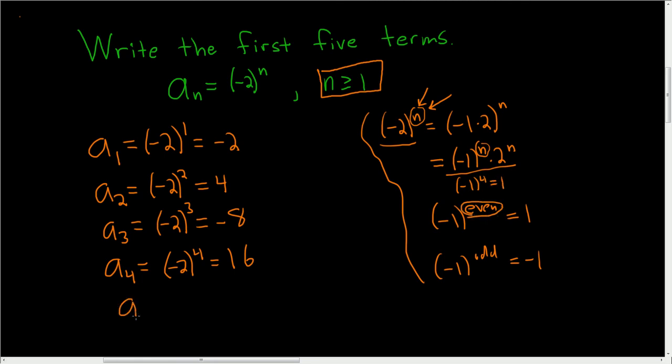And then finally, a sub 5 is negative 2 to the 5th power. 5 is odd, so you get a negative answer, which is negative 32.